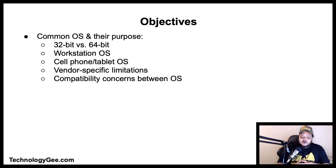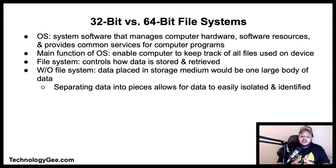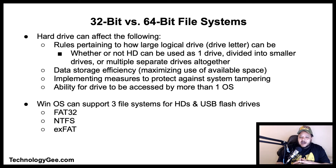Let's talk about 32-bit versus 64-bit file systems. An operating system is system software that manages computer hardware, software resources, and provides common services for computer programs. One of the main functions of an operating system is to enable the computer to keep track of all of the files used on the device. In computing, a file system controls how data is stored and retrieved. Without a file system, data placed in a storage medium would be one large body of data with no way to tell where one piece of data stops and the next begins. By separating the data into pieces and giving each piece a name, the data is easily isolated and identified.